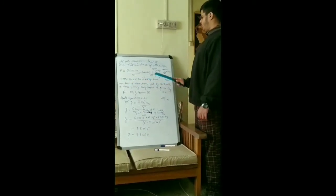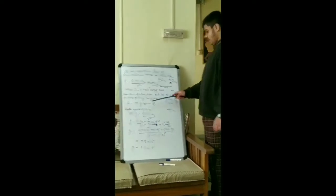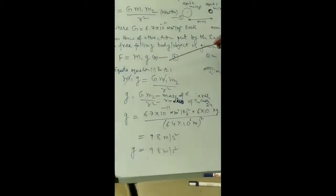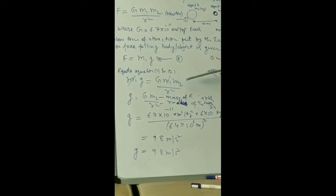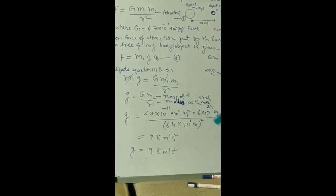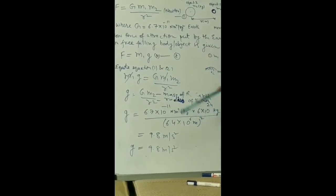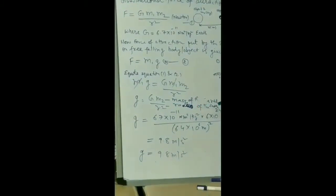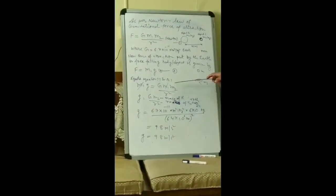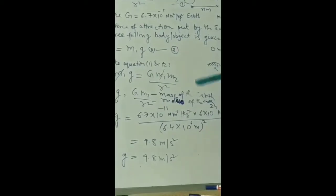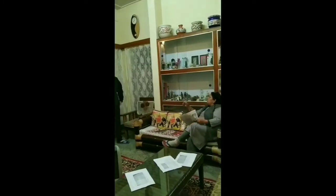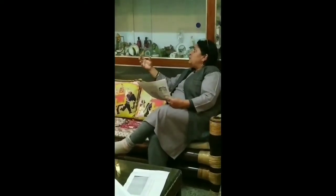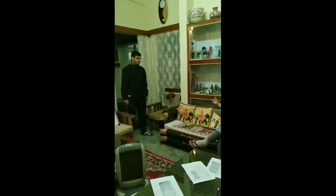The force of attraction exerted by the earth on freely falling bodies or objects is given by: force equals mass 1 into small g — equation 2. Now we equate equation 1 and equation 2: mass 1 × small g = big G × mass 1 × mass 2 / r square. Here mass 2 is the mass of the earth and r is the radius of the earth. By putting the respective values of mass of the earth and radius of the earth, we get small g = 9.8 meters per second square. We have now proven that the value of small g has a constant value, just as big G has a constant value.